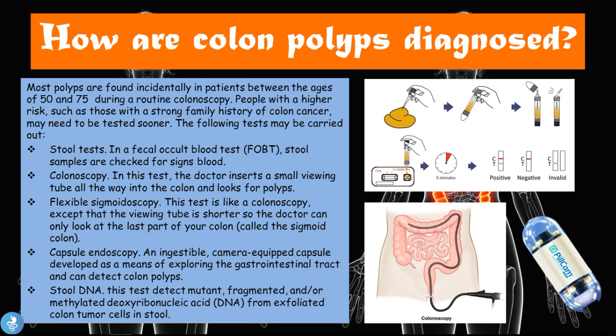A colonoscopy involves the doctor inserting a small viewing tube all the way into the colon to look for polyps. A flexible sigmoidoscopy is like a colonoscopy except the viewing tube is shorter, so the doctor can only view the last part of the colon called the sigmoid colon. We could also do a capsule endoscopy, where an ingestible camera-equipped capsule is swallowed by the patient to explore the gastrointestinal tract and detect colon polyps.